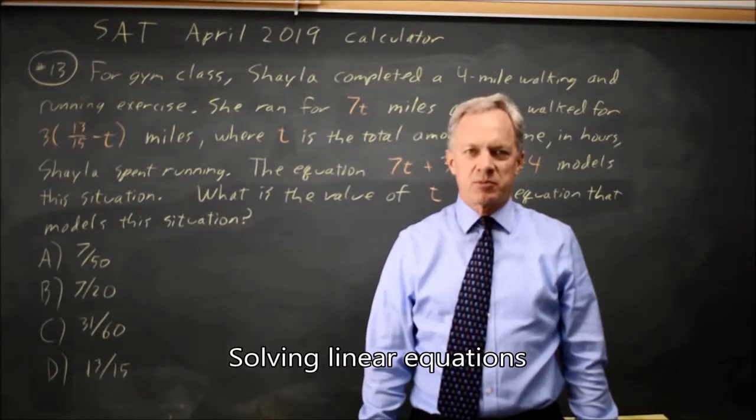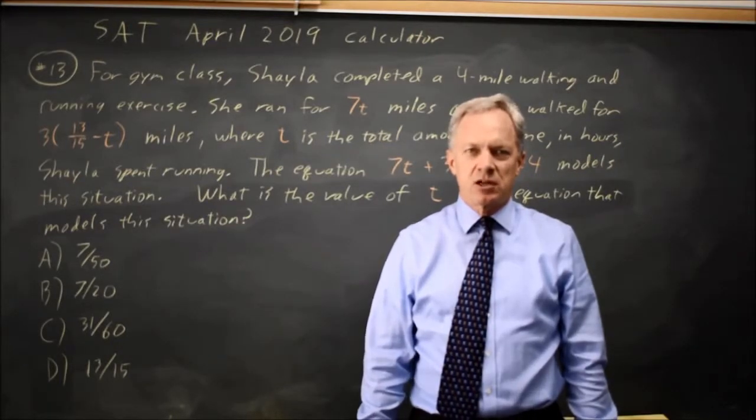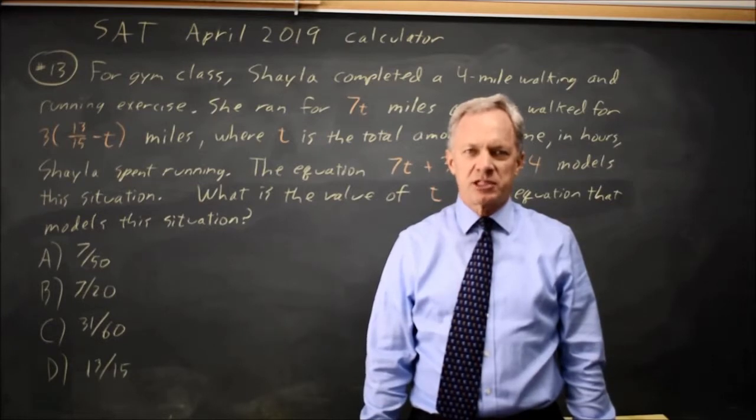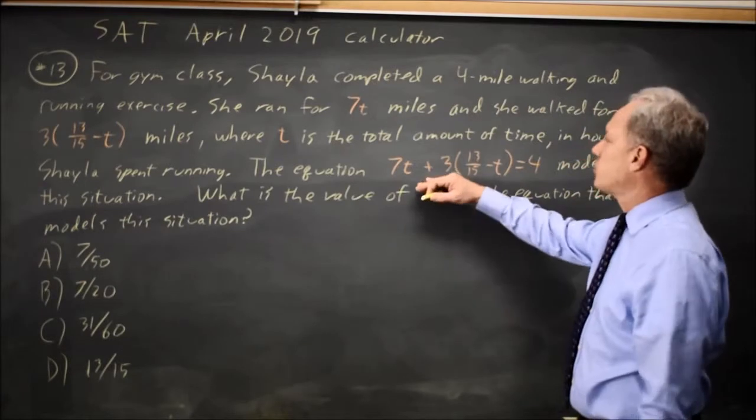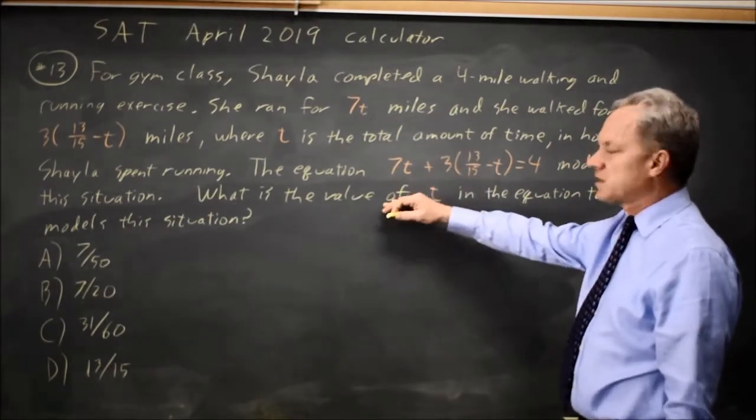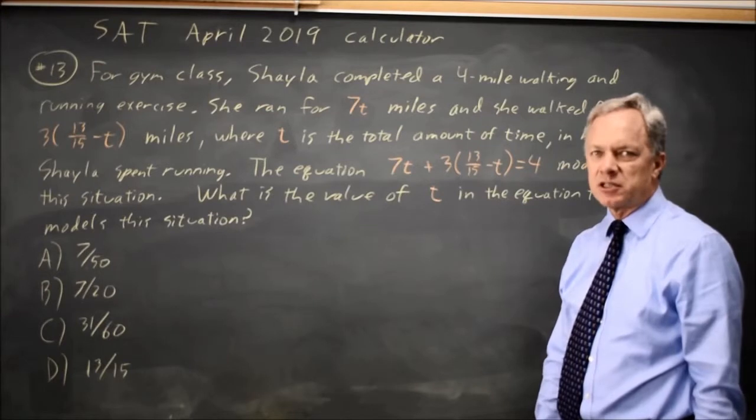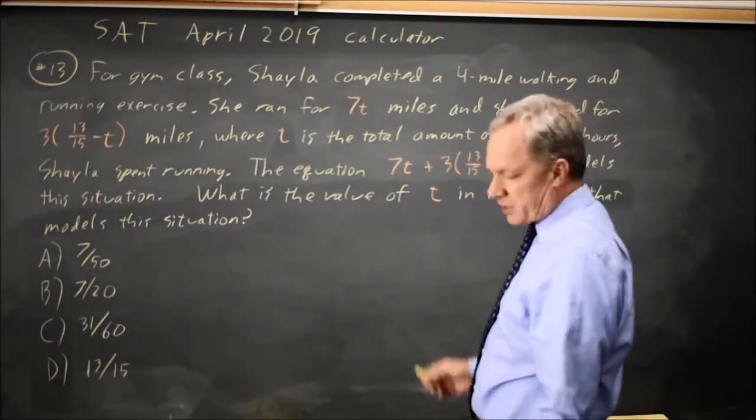This is calculator question number 13 from the April 2019 SAT. College Board gives us a paragraph describing Sheila's exercise routine, and they ask us to solve an equation for t. In this case, since they're just asking for the value of t, we don't have to pay much attention to the context. We're just doing algebra.